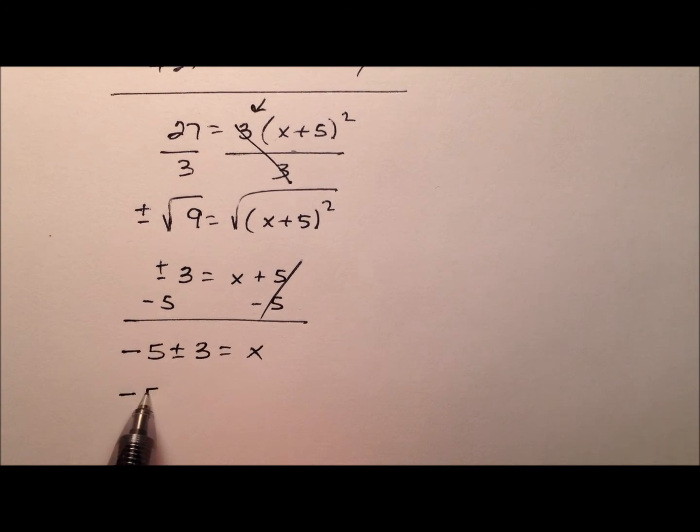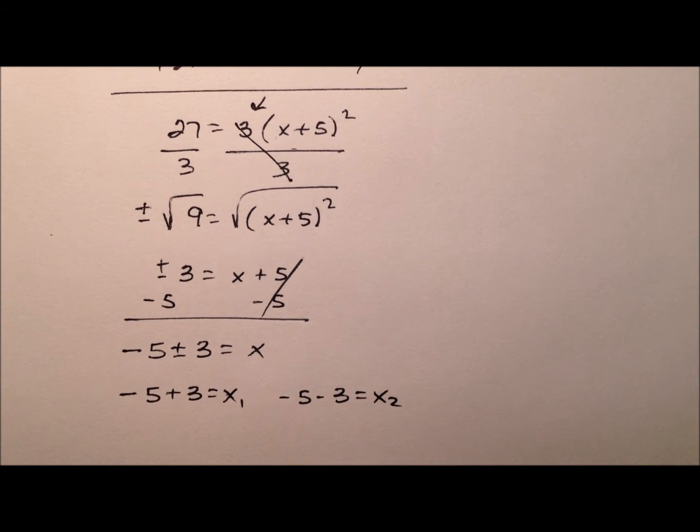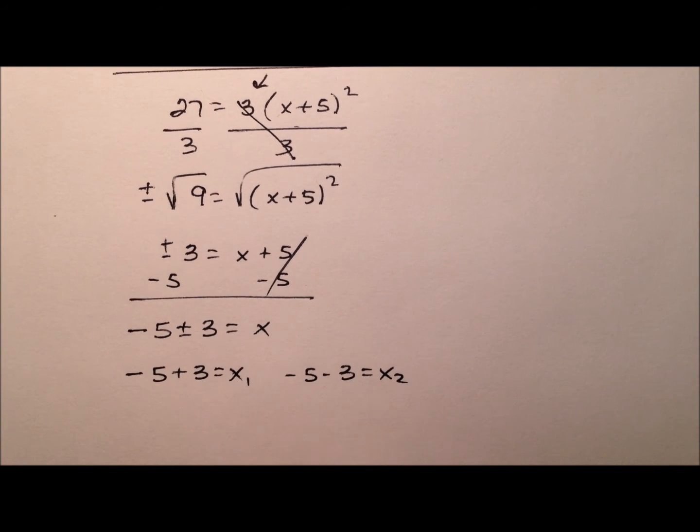So that'll be a -5 + 3, and a -5 - 3 will equal these two x values, x sub 1, x sub 2, or whatever for our roots here, or our intercepts actually. So this first guy will be a -2, and this guy will be a -8.